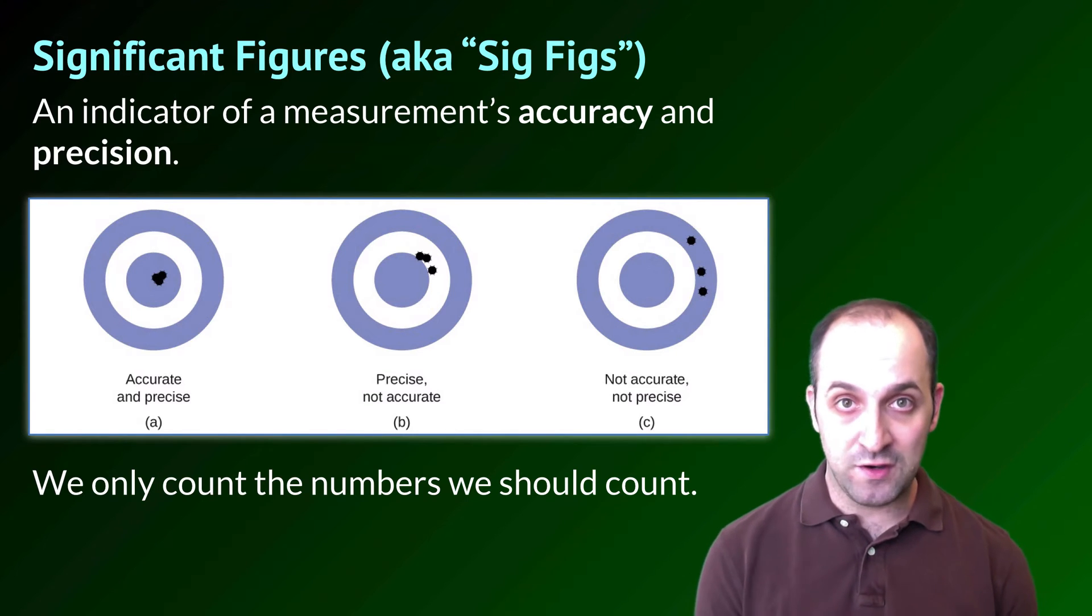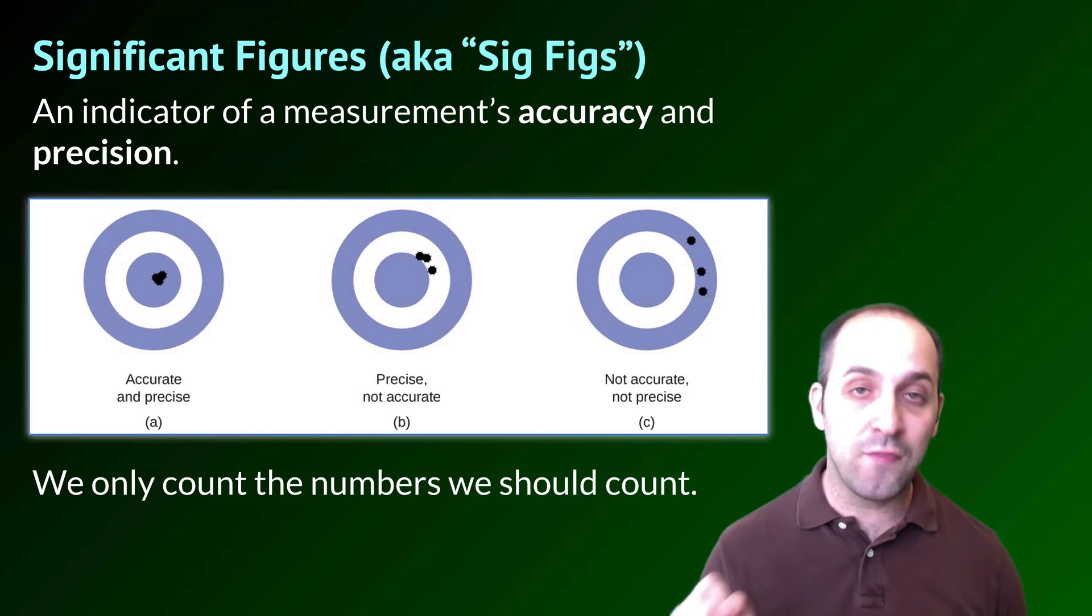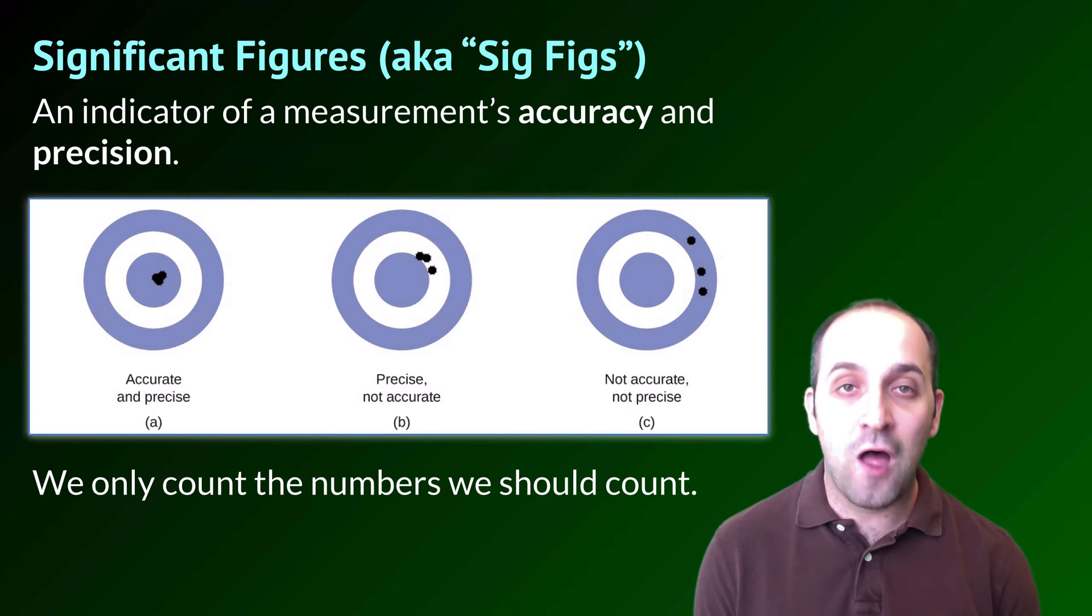Accuracy is a little bit different. Accuracy is how close a particular measurement is to its actual accepted value. The classic example to explain this is a dartboard and looking at the pattern of darts on that dartboard.